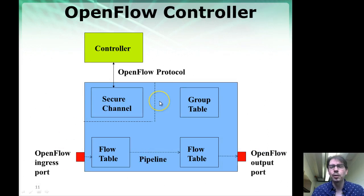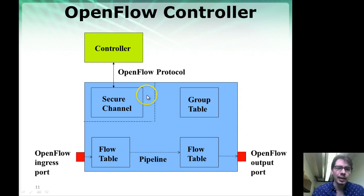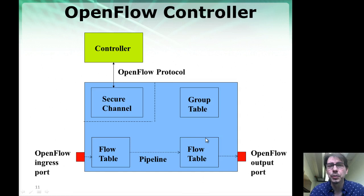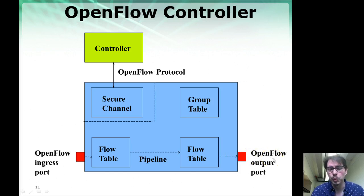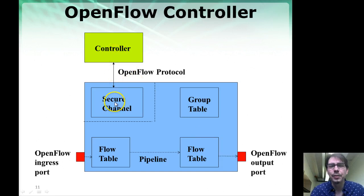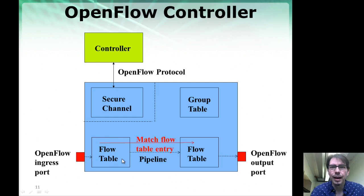A device under OpenFlow — again, this could be a network switch, a network router, or a virtual switch running as software together with your operating system or virtual machine — has a data path where packets come through an input port and go through a pipeline of flow tables. These tables describe what to do with a packet, and eventually the packet goes out to an output port. If a flow matches a set of rules programmed by the controller, the packet flows through the network without any intervention of external software.